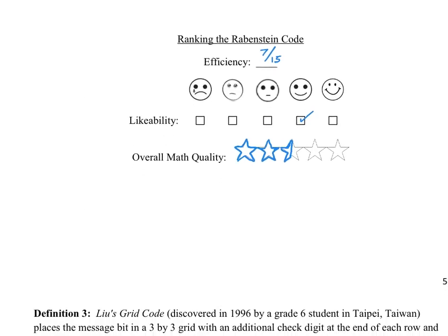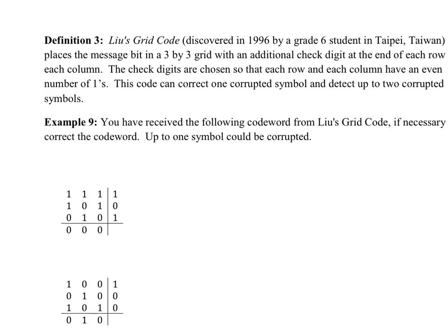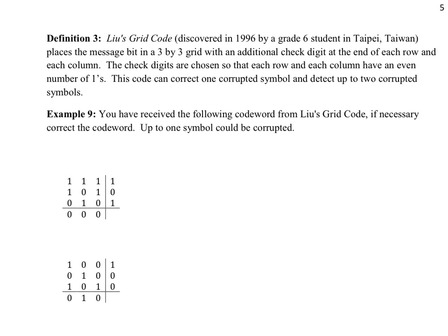The next one is called Lue's grid code. What Lue's grid code does is place the message in a three by three grid — you could use a different size grid, but for our purposes we'll use a three by three grid. Then we place an additional check digit at the end of each row and at the end of each column. The check digit, very similar to the Ravenstein code, is designed so that the total number of ones is an even amount. Let's go through and check each row and column to see if we have an even amount.